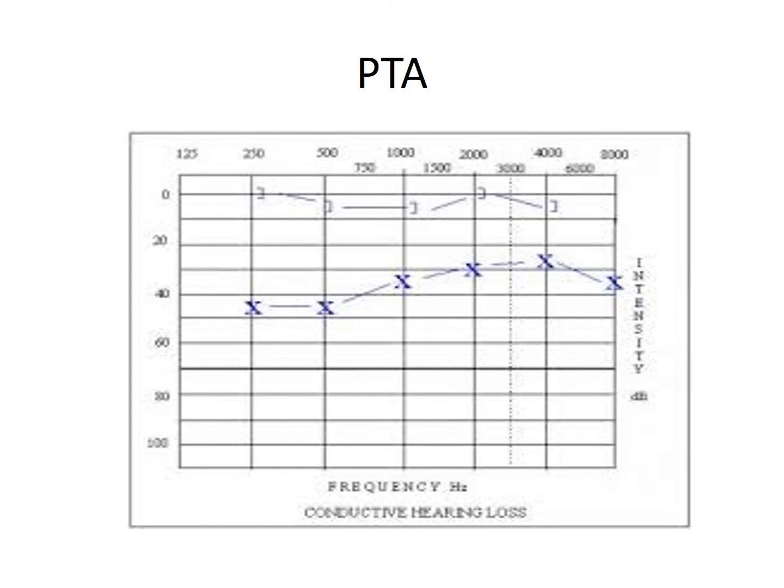This is an example of a Pure Tone Audiogram with Conductive Hearing Loss. Here we can see that the Air-Bone Gap is more than 20 dB at almost all frequencies. So this is how a Pure Tone Audiogram in Conductive Hearing Loss looks.